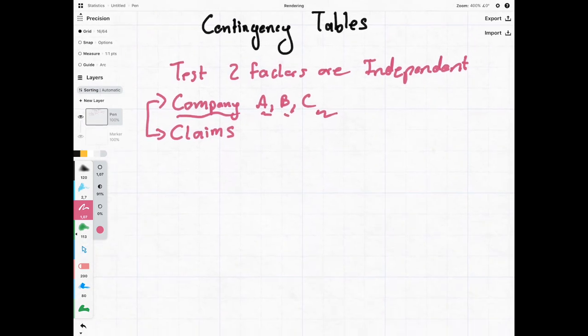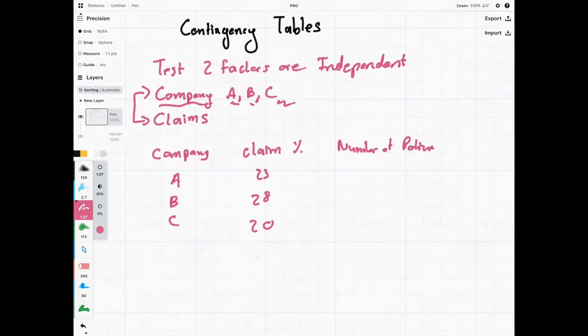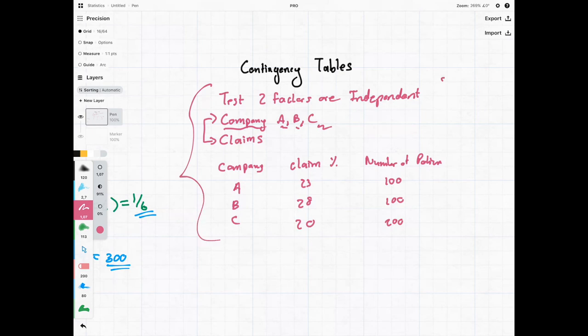In our example we'd be given the following information. We'd be told that we have these three companies A, B and C. We'd be told that their claim proportion is as follows: 23, 28 and 20. We'd also be told the number of policies - so number of policies in force 100, 100, 200. Now we're getting all of this information from the exam question. That is our data.